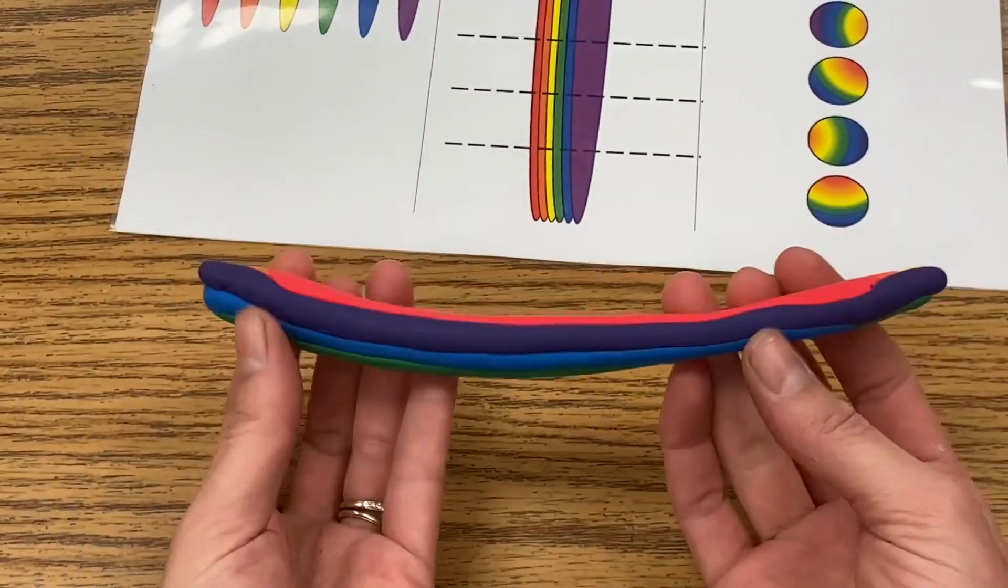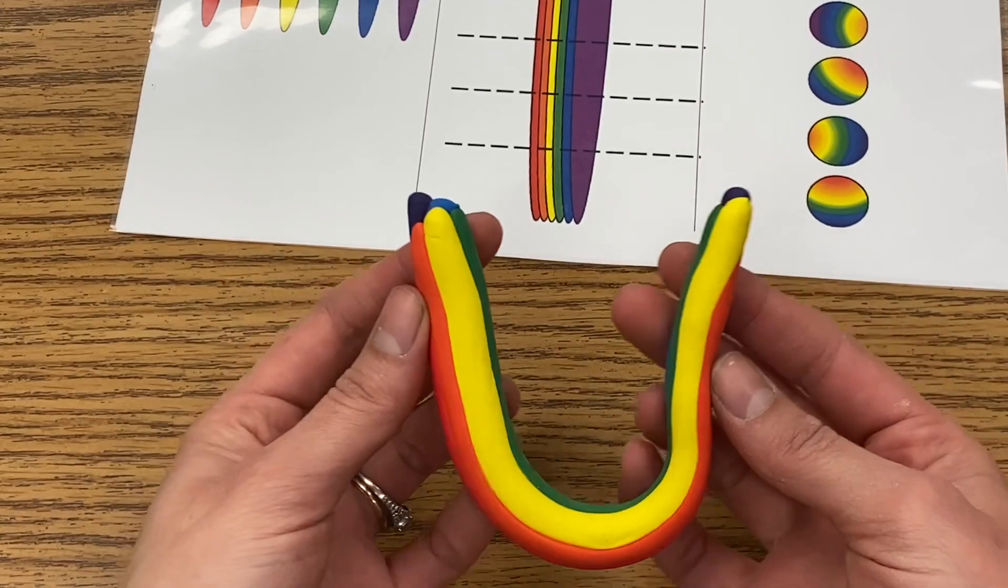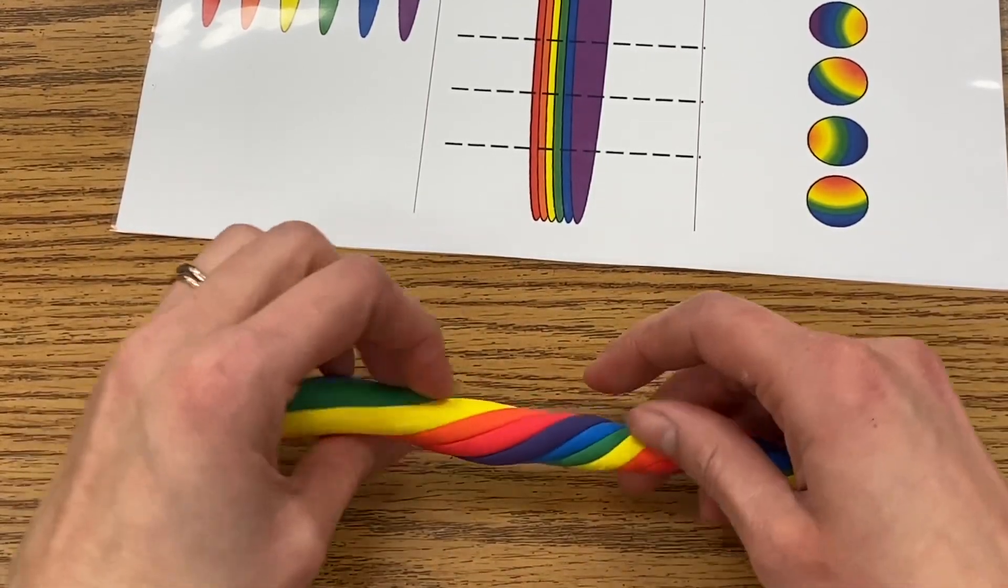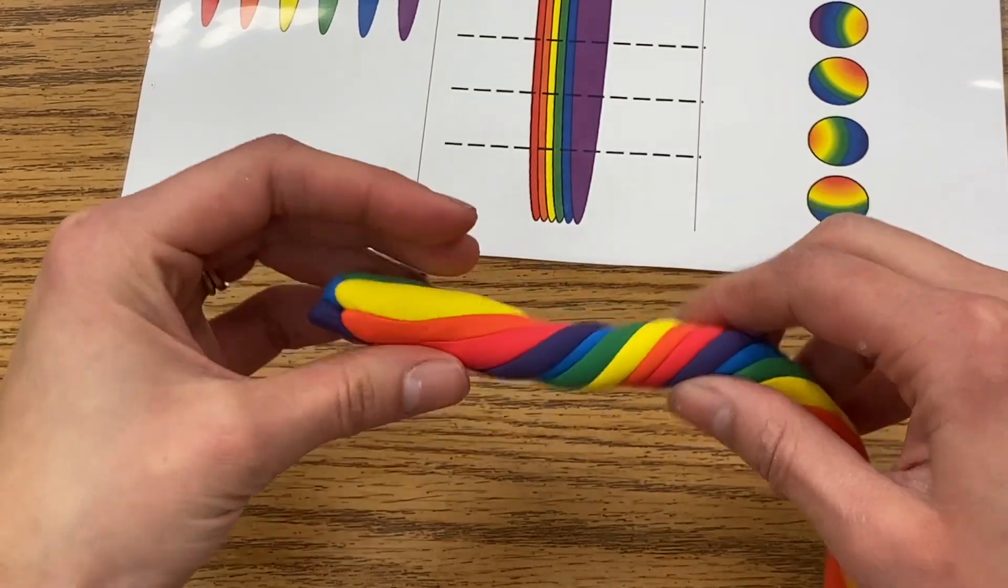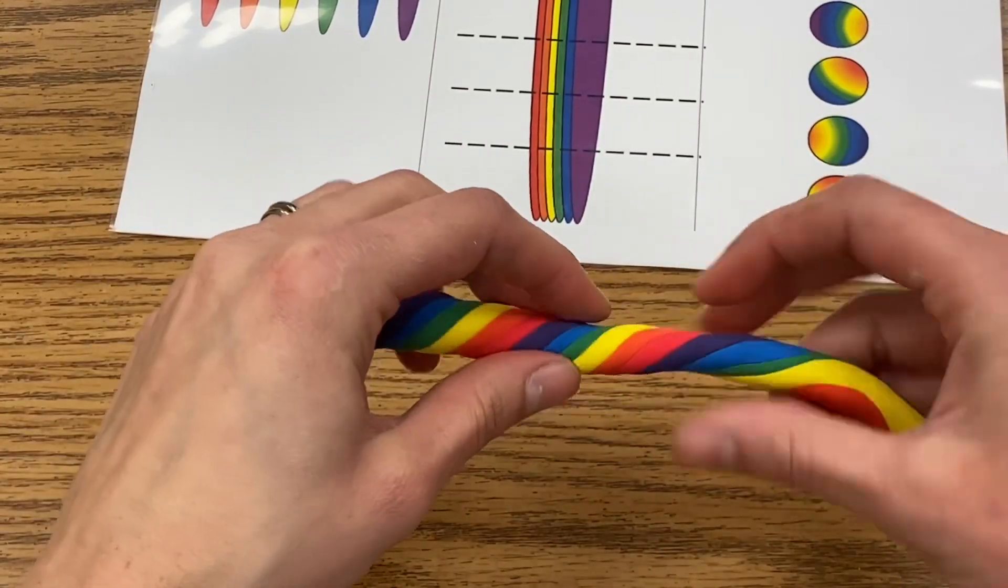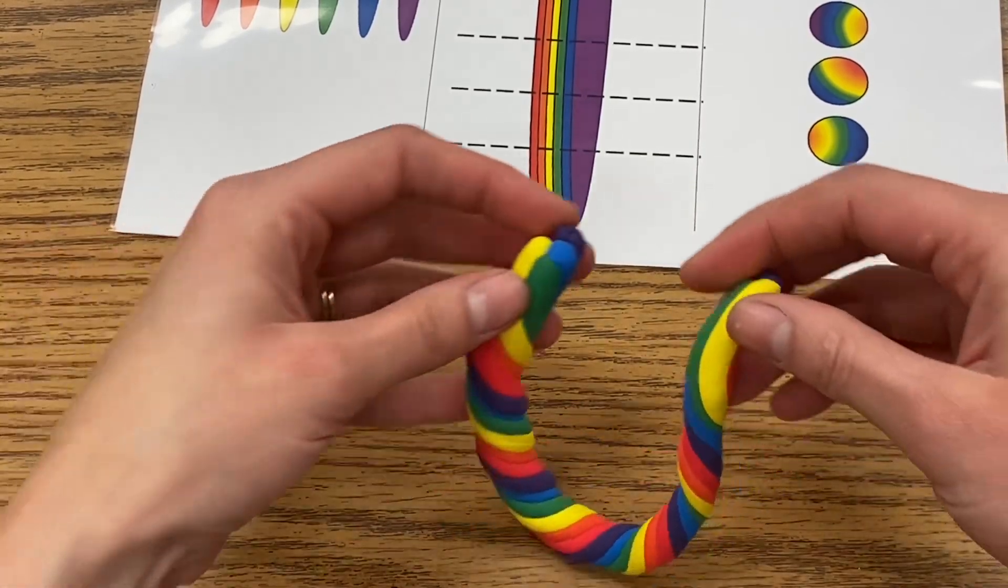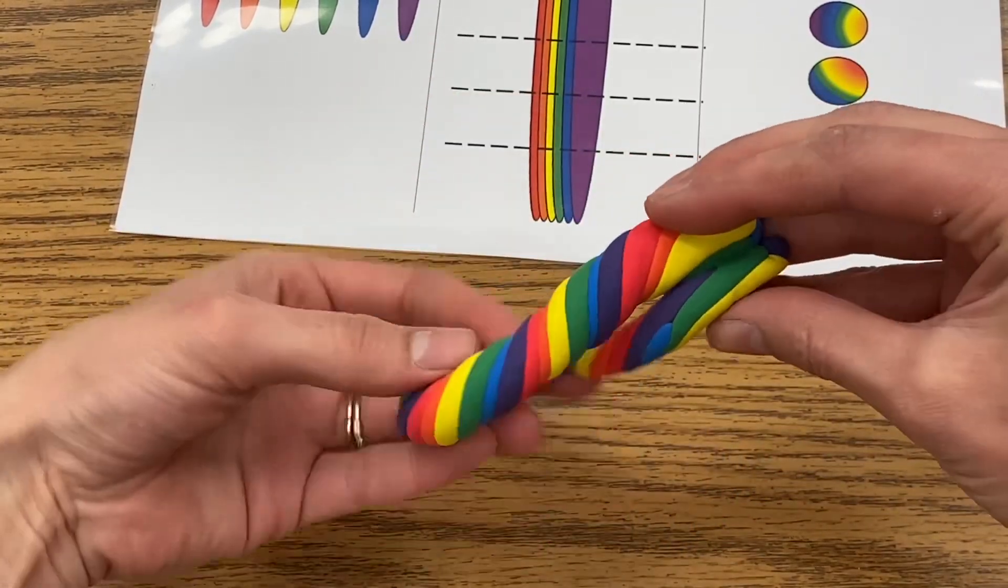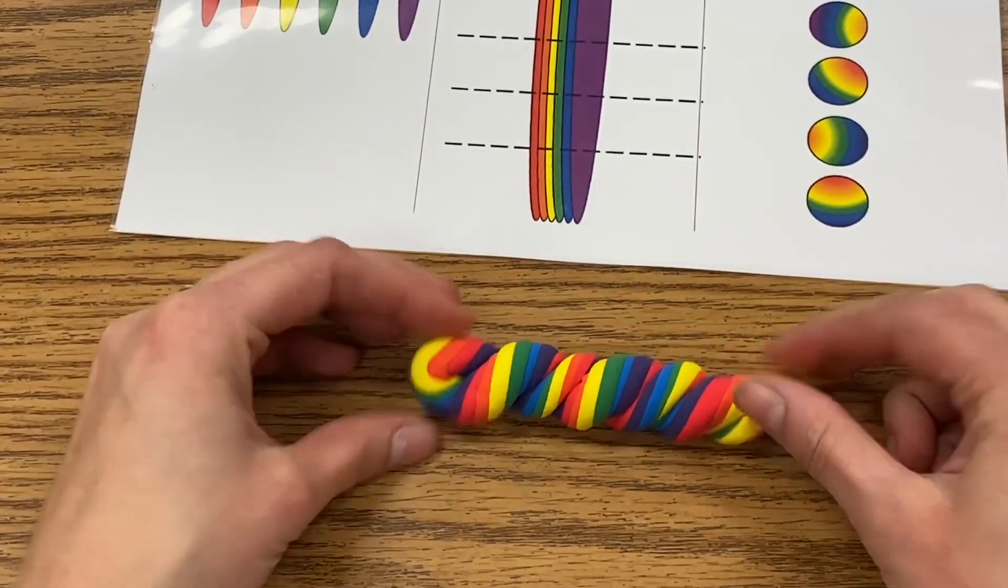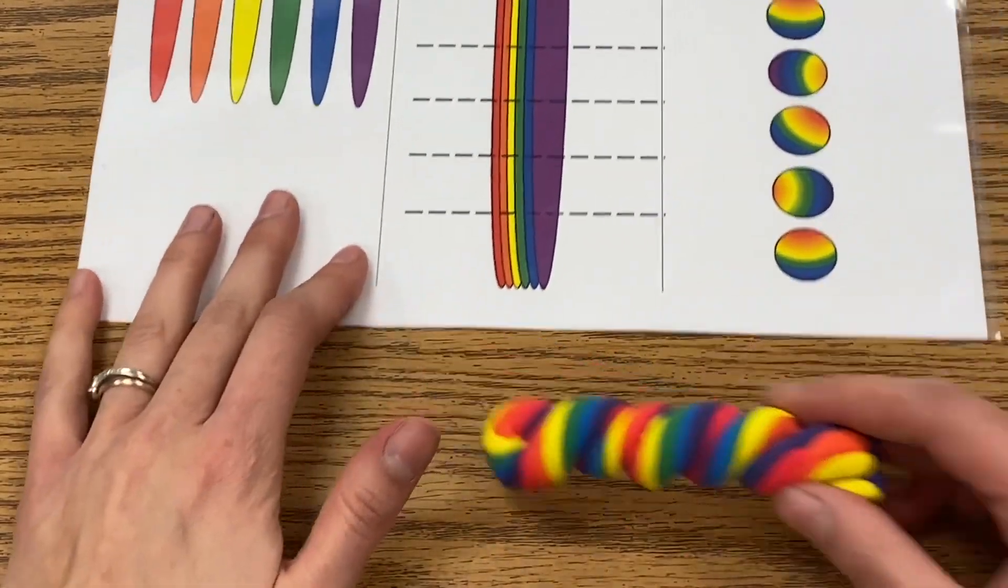Now you could leave it like this if you wanted to, or you can do one more fun thing where you take your piece and you twist it. And some kids even like to fold it in half and twist it one more time.